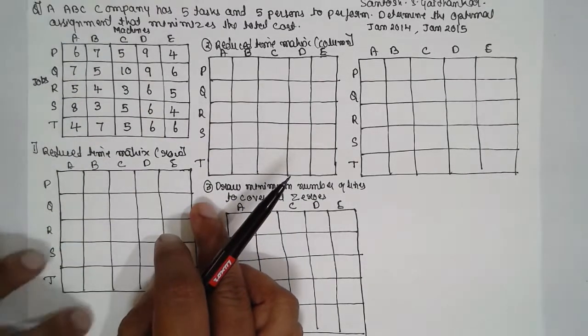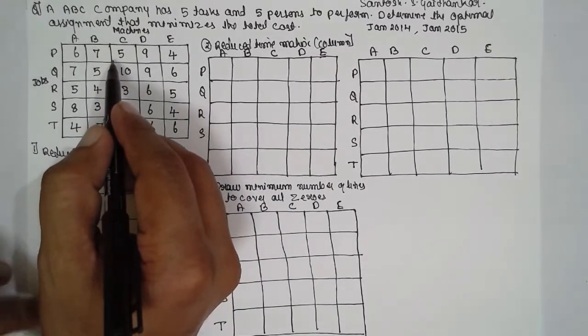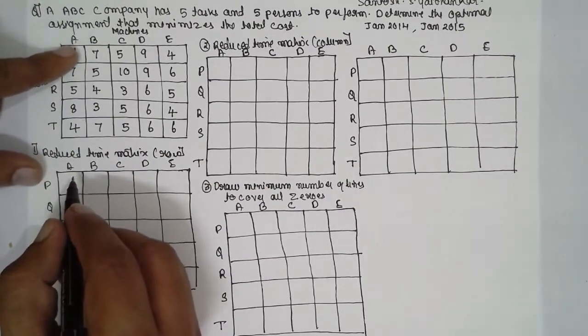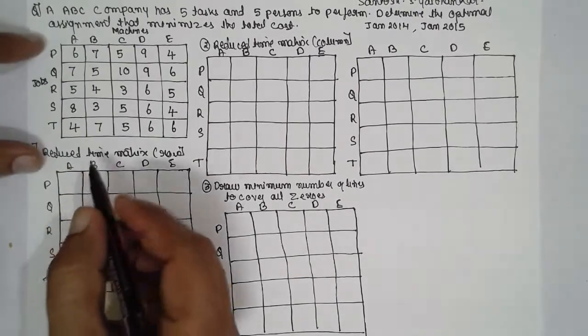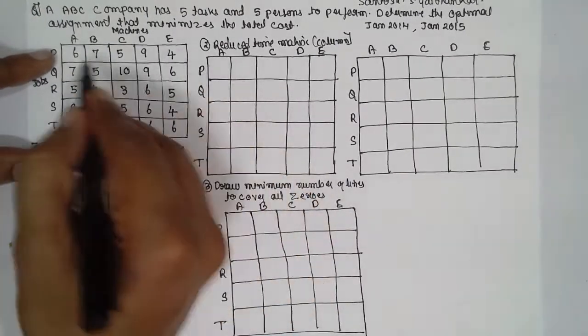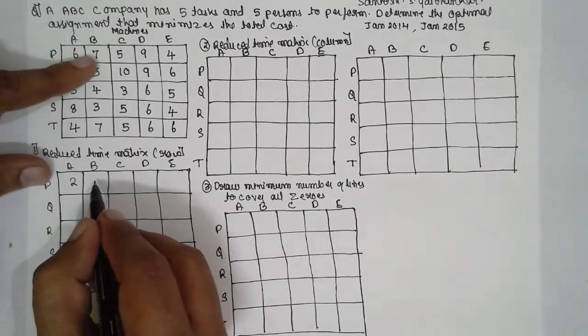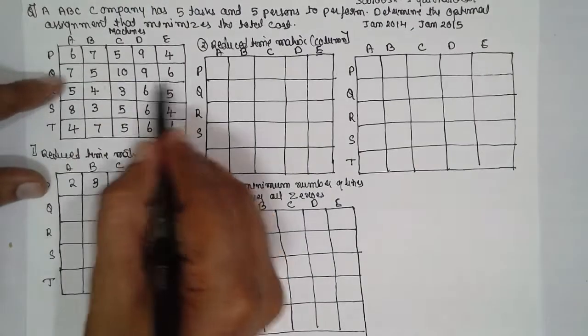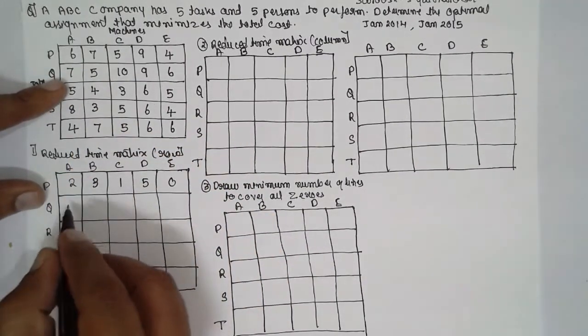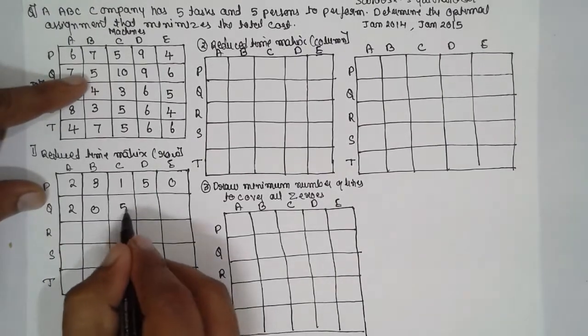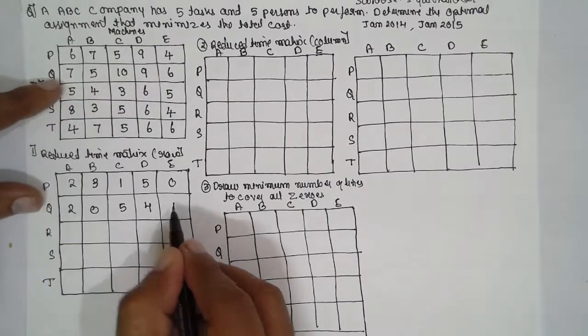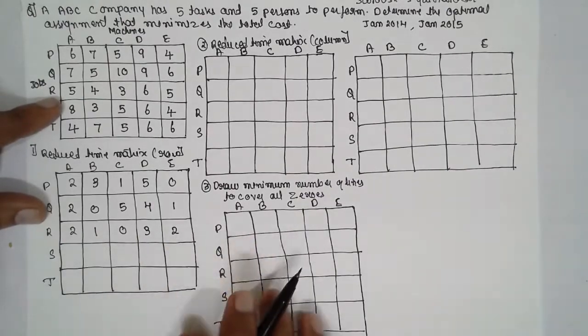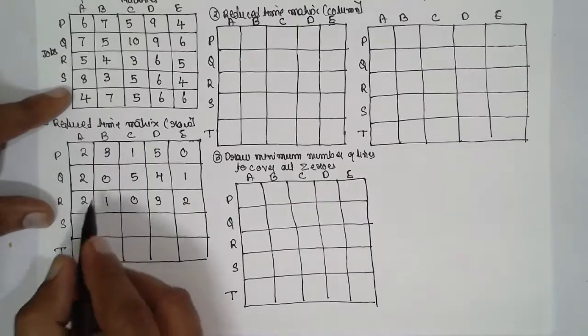First, reduce the time matrix row-wise. That means you have to select the smallest value in the row. The smallest is 5. Wait, sorry, 4 is the smallest here. So 6 minus 4 is 2, 7 minus 4 is 3, then 1, 5, and 0. Here the smallest is 5. 7 minus 5 is 2, then 0, 0, 5, 4, and 1. The smallest is 3, giving us 2, 1, 0, 3, 2. Next, the smallest is 3 here.